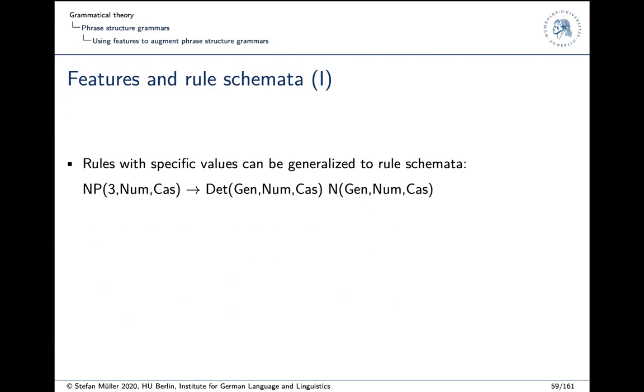Now we can generalize over these rules and derive rule schemata. So here you see one, NP third number case and determiner gender number case and noun gender number case. Okay. The interesting thing is that the values of number and case do not matter. So the only thing that matters in this rule is that they are identified. So if you have certain genders in the lexicon, like feminine, masculine or neutral, then they can be inserted there and then the determiner and then the noun has to have the same gender and number features.